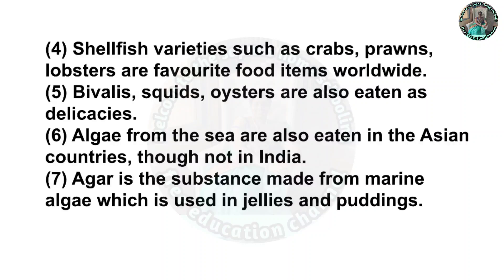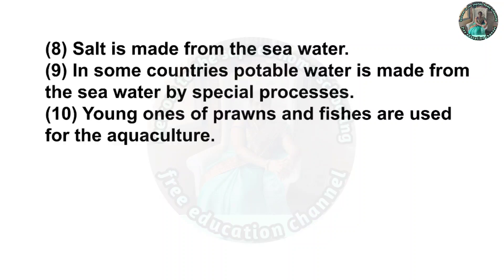Sixth, algae from the sea are also eaten in Asian countries, though not in India. Seventh, agar is the substance made from marine algae which is used in jellies and puddings. Eighth, salt is made from sea water. Ninth, in some countries potable water is made from sea water by special processes. Tenth, young ones of prawns and fishes are used for aquaculture.